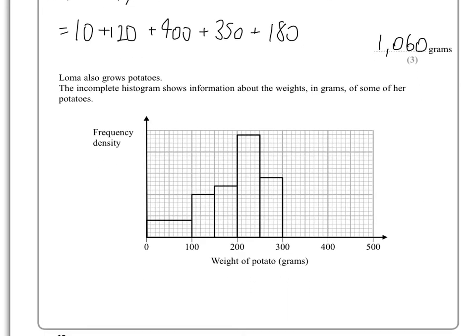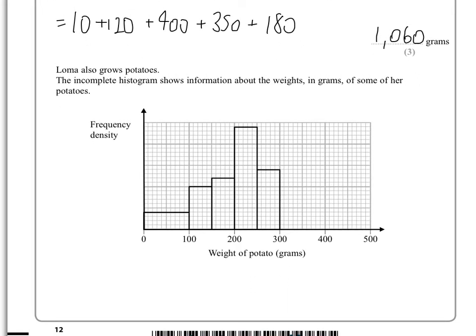Now, in the next part, we're told that Loma also grows potatoes, and the incomplete histogram below shows the frequency density of those potatoes.